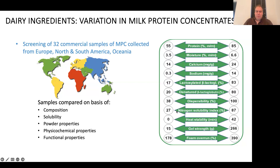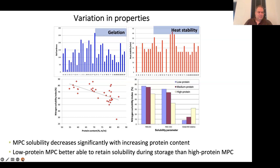That variability also translated into functional properties. We had samples we could heat for 42 minutes before coagulation happened, and some that we couldn't heat at all — even warming them up to 120 degrees, they already coagulated. That made us say we need to look a bit further. Acid gelation varied enormously between different samples. Heat stability also varied widely — some extremely stable, some practically unstable, coagulating before even reaching 90 degrees. One of the things we decided to dive into a lot more was solubility and powder reconstitution.